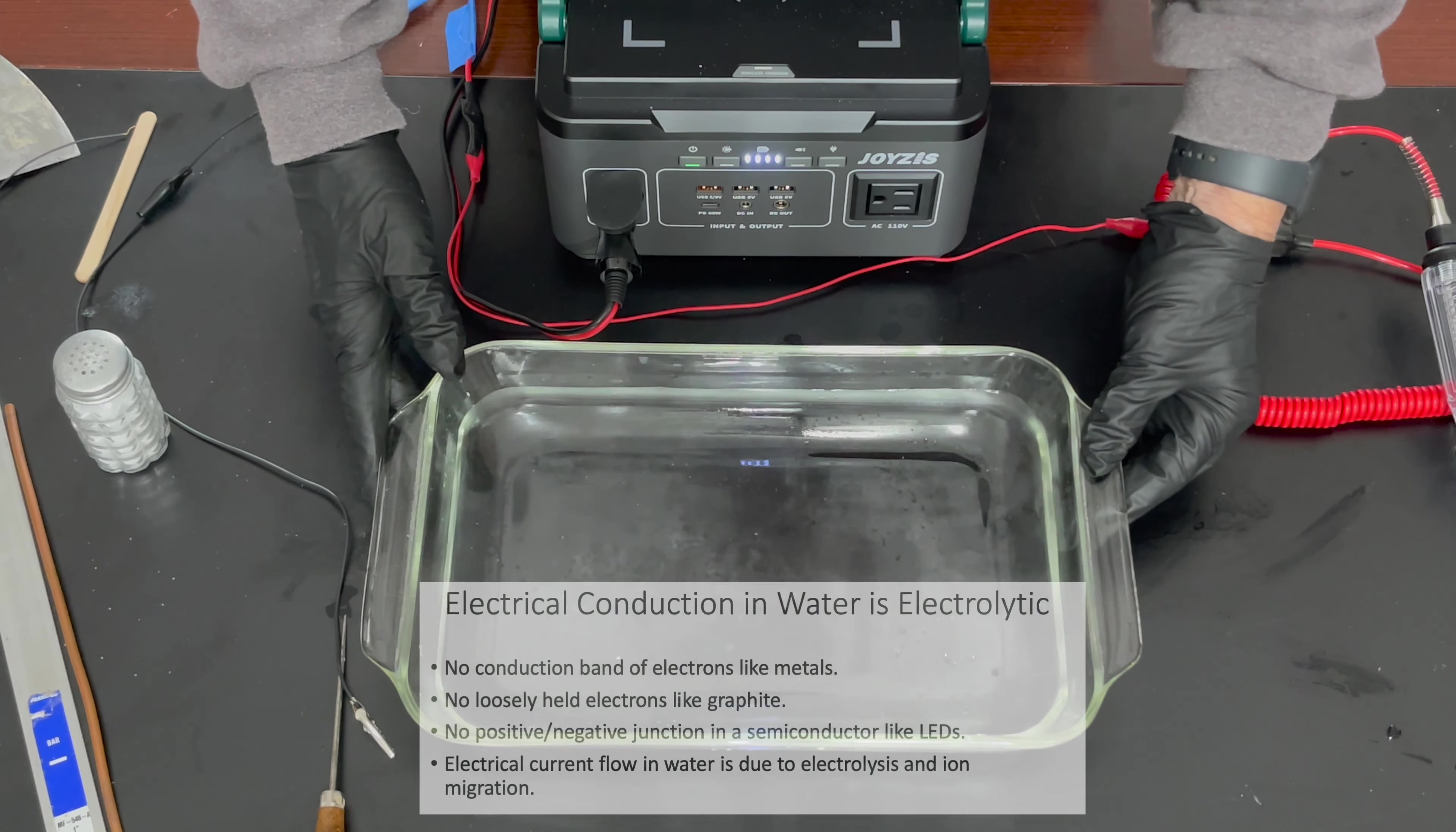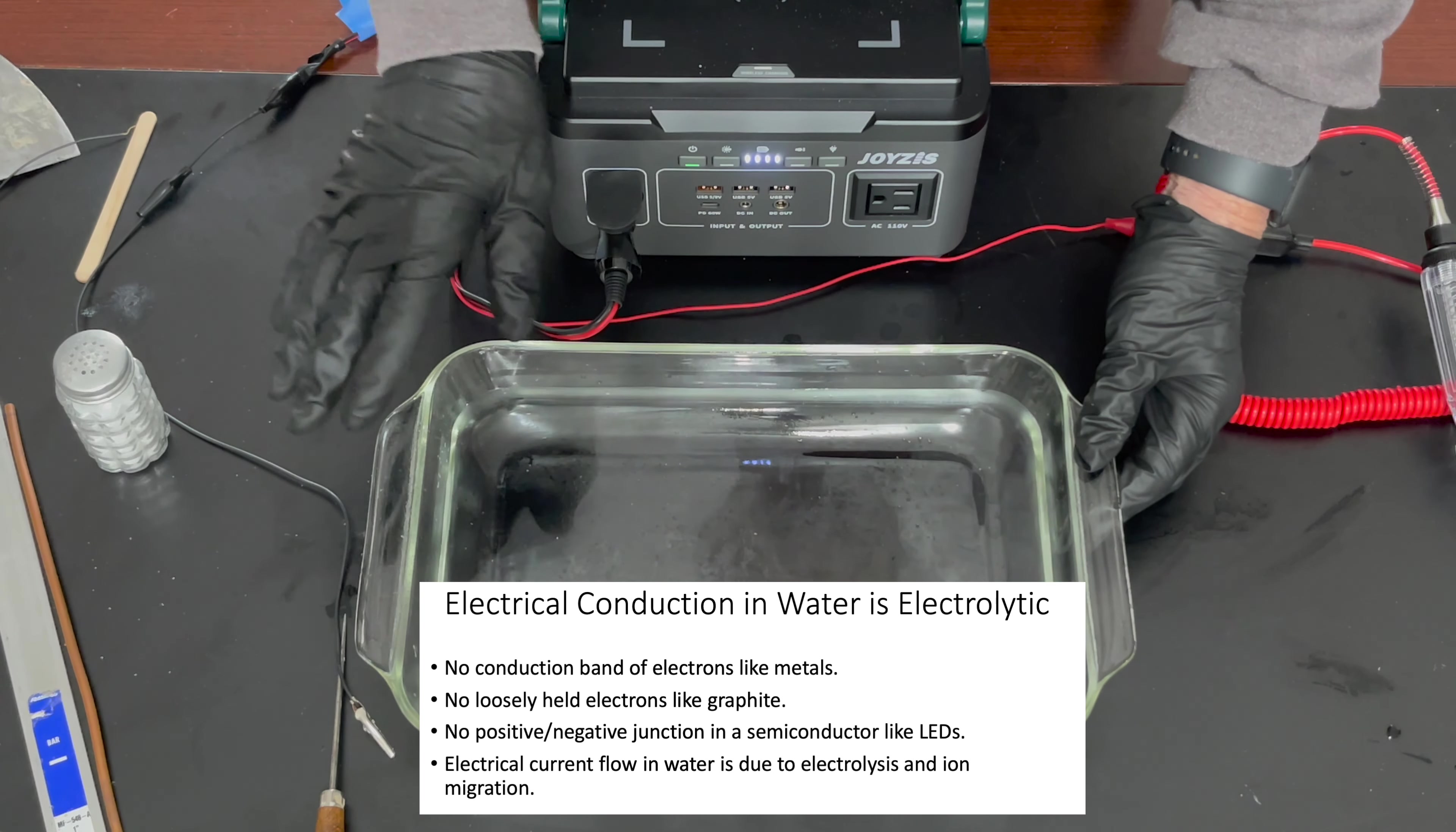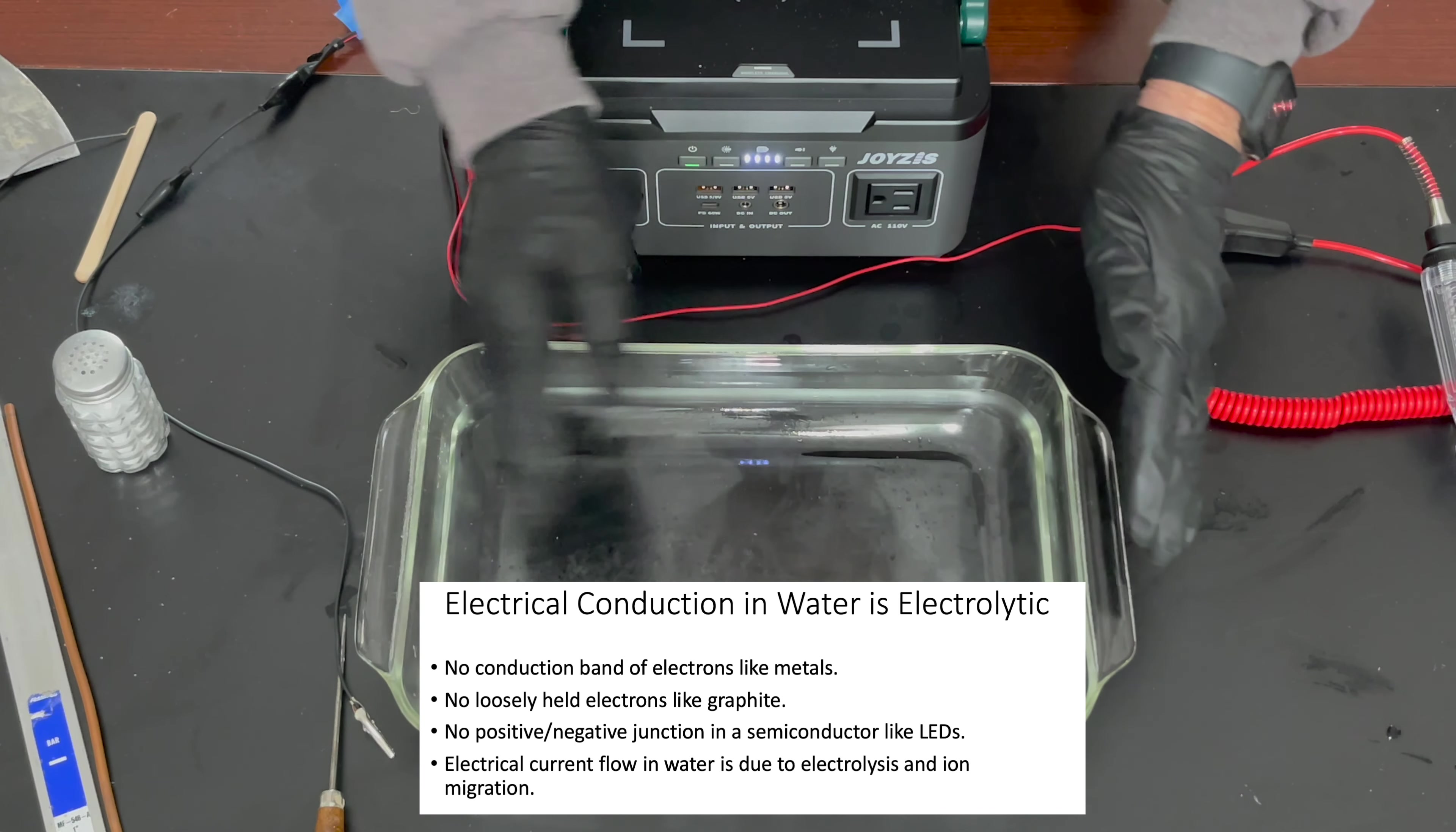Okay, we're going to take a look at the conductivity of water. Water doesn't have a conduction band of electrons like metal. It doesn't have loosely held electrons moving around above a hexagonal carbon plane like graphite. It doesn't have a positive and negatively doped semiconductor like in a light emitting diode. To get current to flow in water, you're going to have to have ion migration.